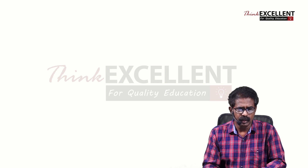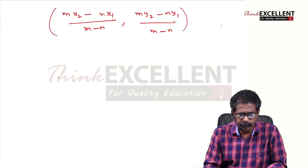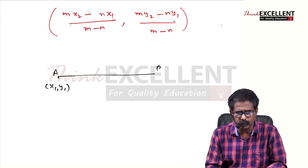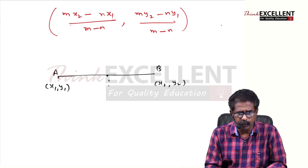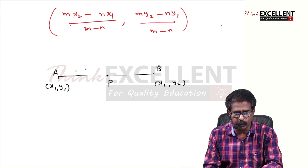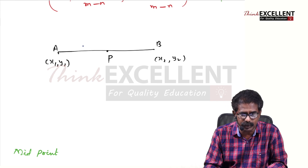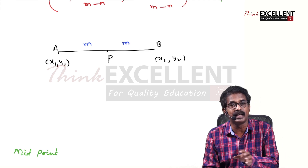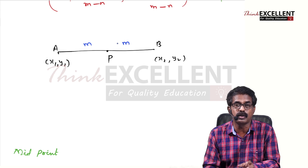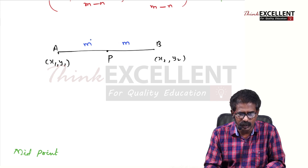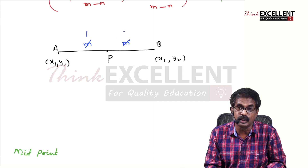Now one particular case — suppose P is the midpoint. A is the point X1, Y1 and B is the point X2, Y2. Midpoint means both the distances are the same. So the ratio M is to N becomes M is to M, which is 1 is to 1. Both are equal, so we take 1 is to 1.